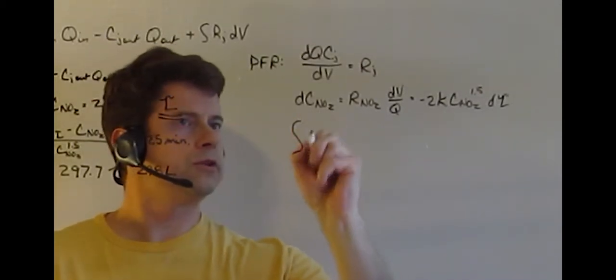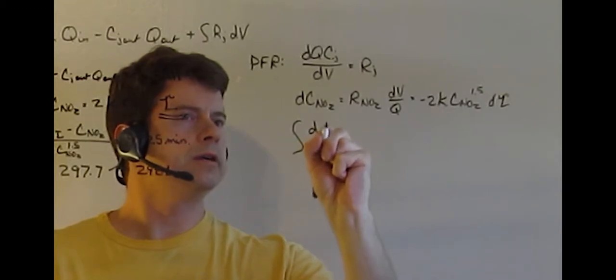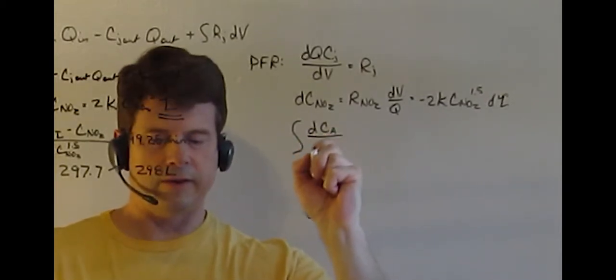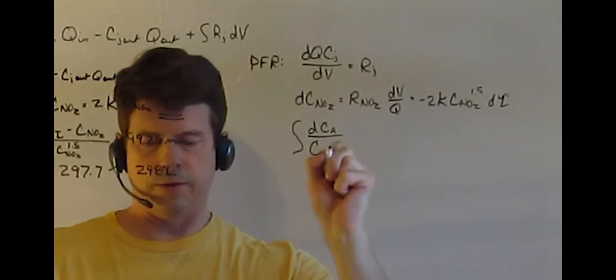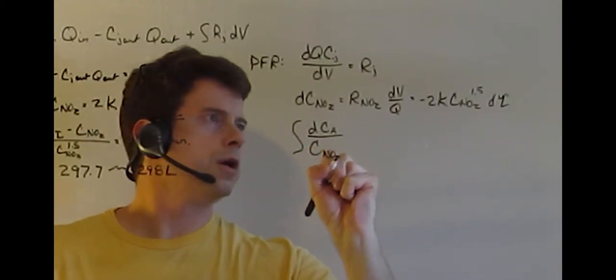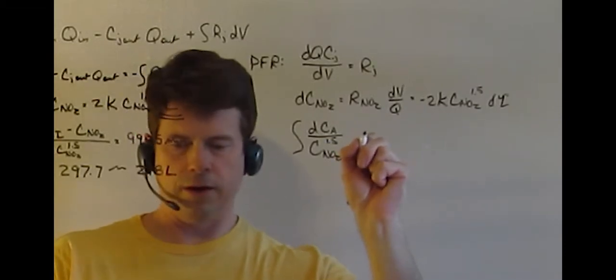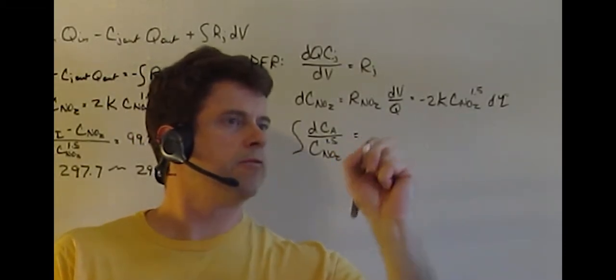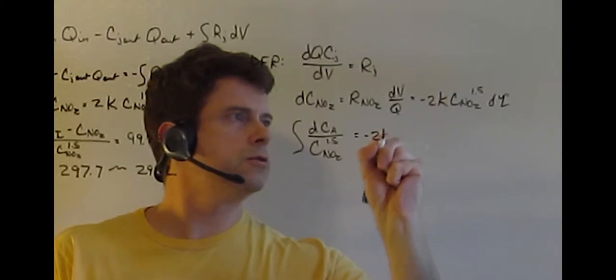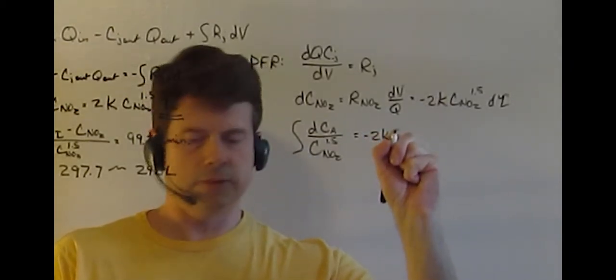This means we're going to have to do the integral of, this becomes D, substitute that with CA, so it'll be a little more straightforward, CNO2 to the 1.5 comes over to this side for integration, and then the right side becomes negative 2K tau.